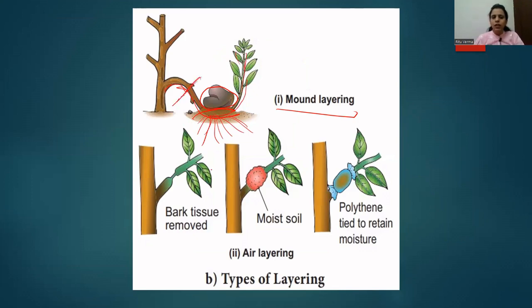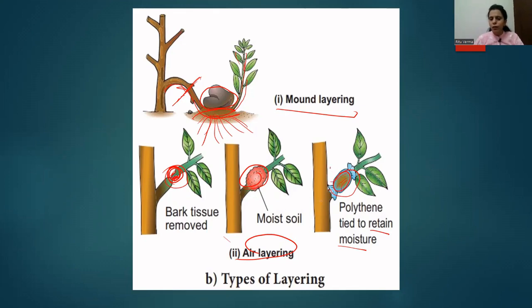This part of the stem will start growing as a completely new plant and will be cut and separated from the parent plant. In aerial layering, the bark of the stem is removed, and around this particular tissue of the stem moist soil is placed. Polythene is tied around this moist soil to retain the moisture. After a few days, adventitious roots will start growing into this soil. Later on, this branch will be completely cut and separated from the main plant, placed in moist soil, and will grow as a new plant.